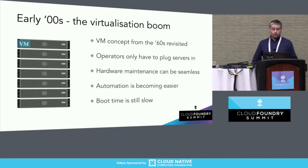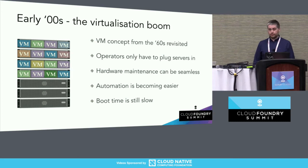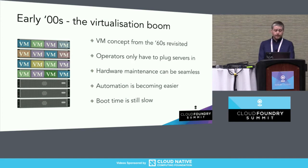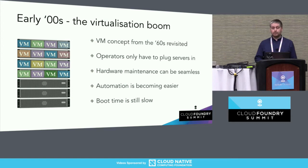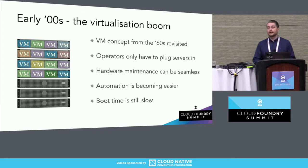Fast forward to the 2000s, when VMware successfully virtualized commodity hardware such as Intel servers. Previously, virtualization technology had been used by IBM since the 60s in mainframes, but never before for commodity hardware. That sparked a big boom in the operations industry. The operator's life significantly got simplified. They still had to know the ins and outs of all the hardware, but their job was just to plug it into the hypervisor, and then anybody could operate this remotely. Hardware maintenance became seamless, and the automation spun off the whole DevOps movement slowly but surely.